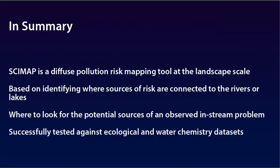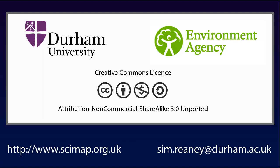In summary, CIMAP is a diffuse pollution risk mapping tool that operates at the landscape scale. It is based on identifying where the sources of risk are actually connected through to the rivers and lakes, and in doing so it provides guidance as to where to look in the landscape to find the potential sources of an observed in-stream problem. It has been successfully tested against both ecological and water chemistry datasets. There is more information on CIMAP, links to the journal papers, and further training videos available on the website at www.cimap.org.uk.